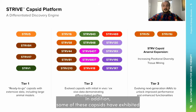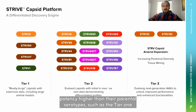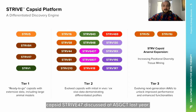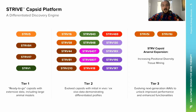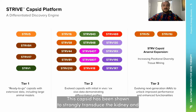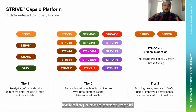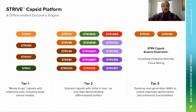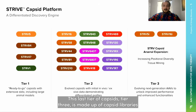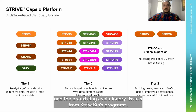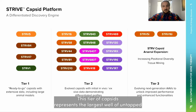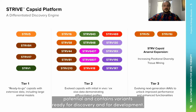In addition, some of these capsids have exhibited potency higher than their parental serotypes, such as the tier 1 capsid Stry47 discussed at ASGCT last year. This capsid has been shown to strongly transduce the kidney at higher protein expression to vector copy number ratios than the parental AAV, indicating a more potent capsid. This last tier, tier 3, is made up of capsid libraries and pre-existing evolutionary tissues from Stride Bio's programs, and represents the largest well of untapped potential, containing variants ready for discovery and development.